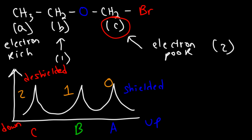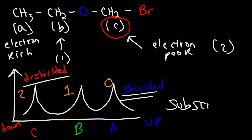Now you know how to identify the relative locations of each signal based on proximity to electron-withdrawing groups. Remember: deshielded protons appear on the left (downfield), and shielded protons appear on the right (upfield). That's it for this video — thanks for watching, and don't forget to subscribe if you found it helpful.